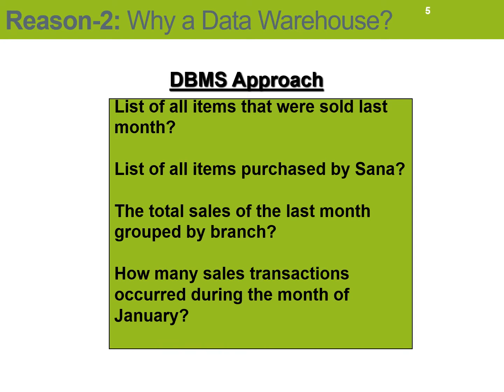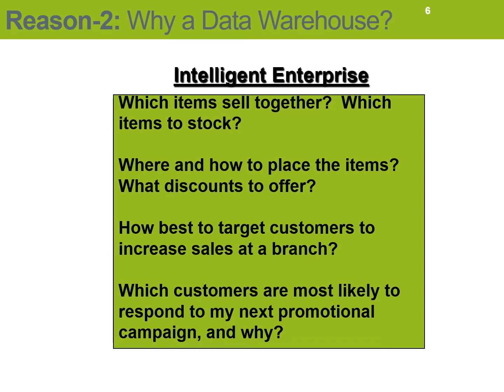Typical DBMS queries can be: show me a list of all items that were sold last month — I can write SQL against that; list of all items purchased by a particular person; the total sales of last month grouped by branch; and how many sales transactions occurred during the month of January — this is again a simple query I can count the total number of transactions.